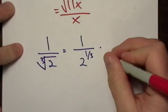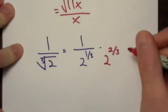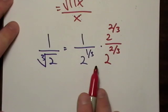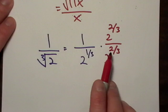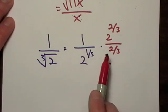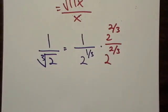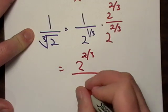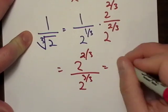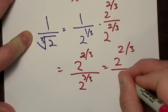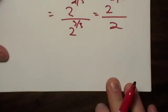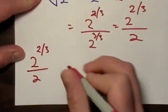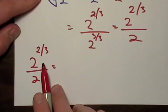Remember that if I have like bases, all I have to do is add the exponents, right? If I add 1/3 plus 2/3, I get 1 back. So there I am. Now 2 to the 2/3—I can break this fraction up because 2/3 is really just 2 times 1/3.